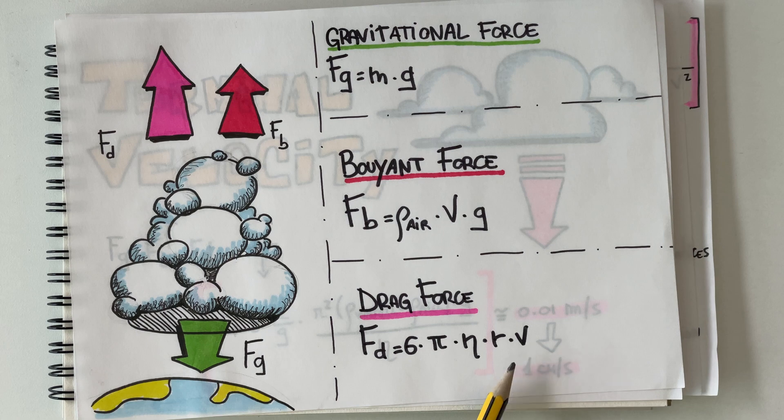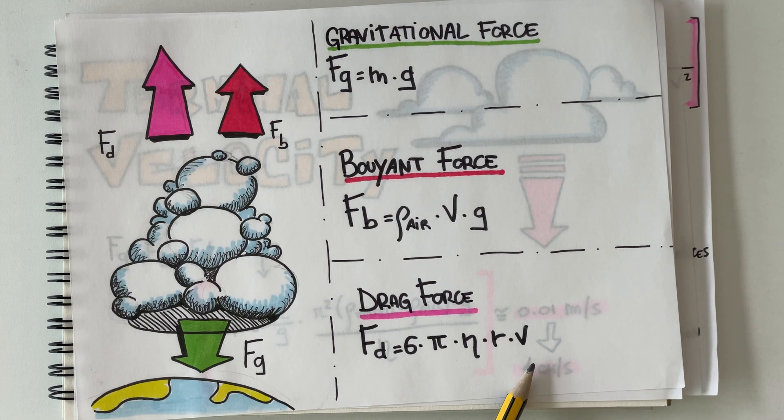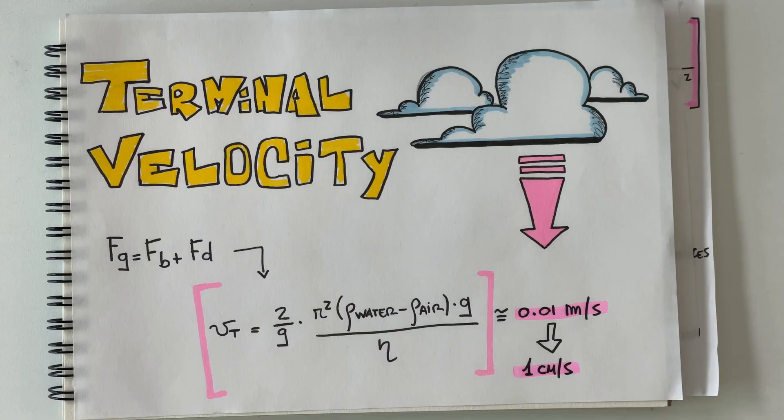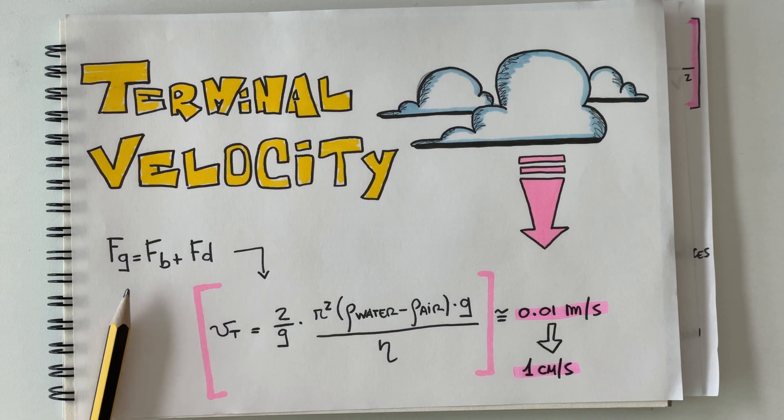So our goal is to determine if these forces balance themselves or if the cloud is going up or down. To do this we are gonna calculate the hypothetical terminal velocity of the cloud. If it's zero we know that the cloud is gonna stay still. If it has some values we will see if the cloud is going up or down.